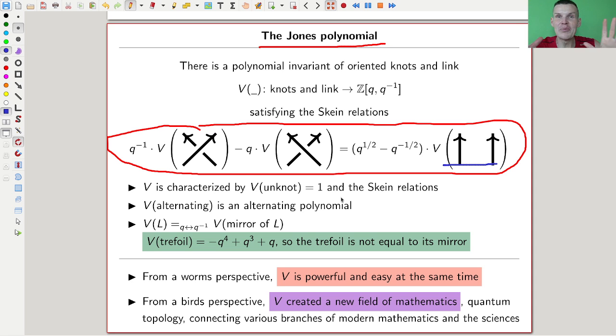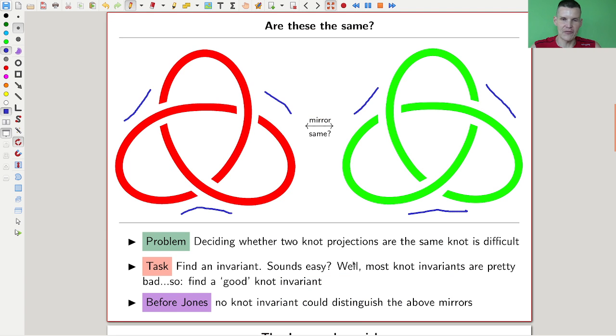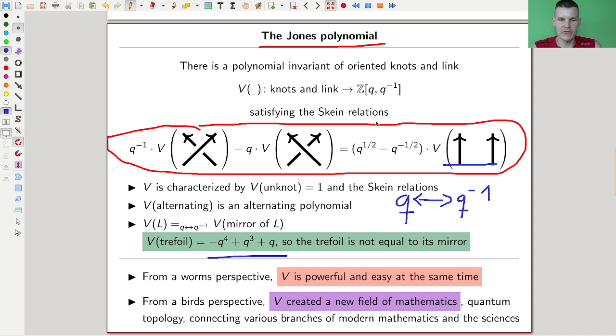Whenever you look at the diagram of a knot, you can have over or under crossings, and they're related by this relation. If you apply this relation recursively around every crossing, you can compute this polynomial. This is one of those very rare times where a very simple idea actually makes a big breakthrough. The mirror image of a knot is always just obtained by the symmetry of sending this quantum parameter to its inverse.